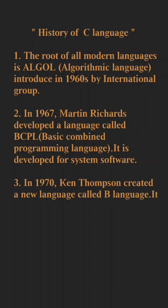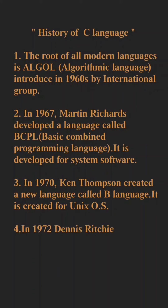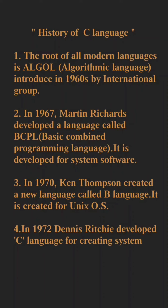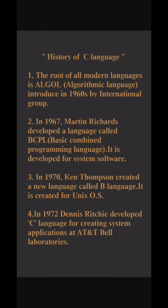B language was created for the Unix operating system. After that, in 1972, Dennis Ritchie developed C language for creating system applications at AT&T Bell Laboratories. This is the history of C language.